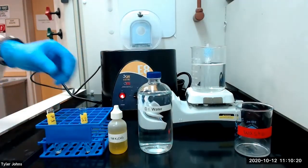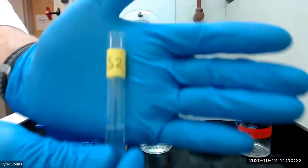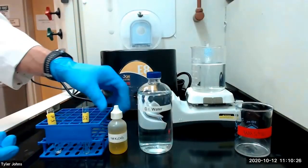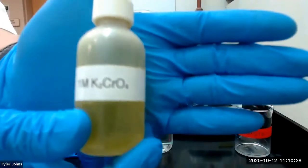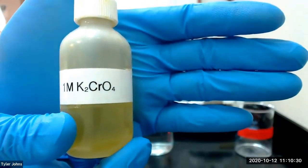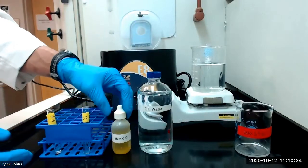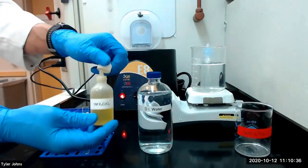To our test tube S2, we will add several drops of one molar potassium chromate. The formation of a yellow precipitate will confirm the presence of lead ion.